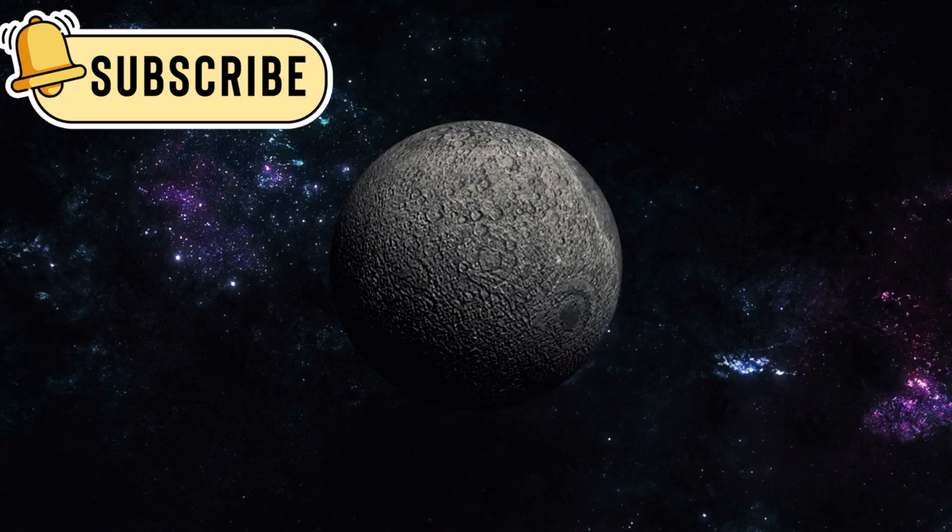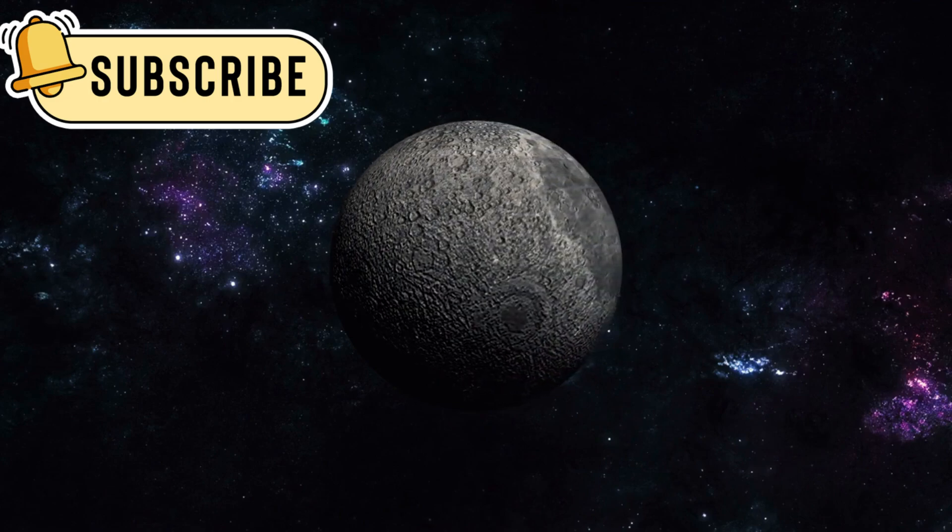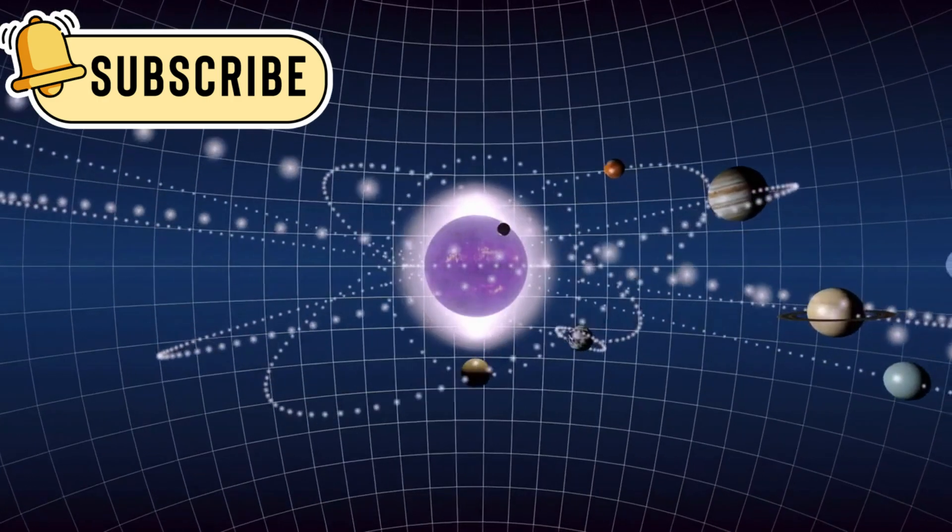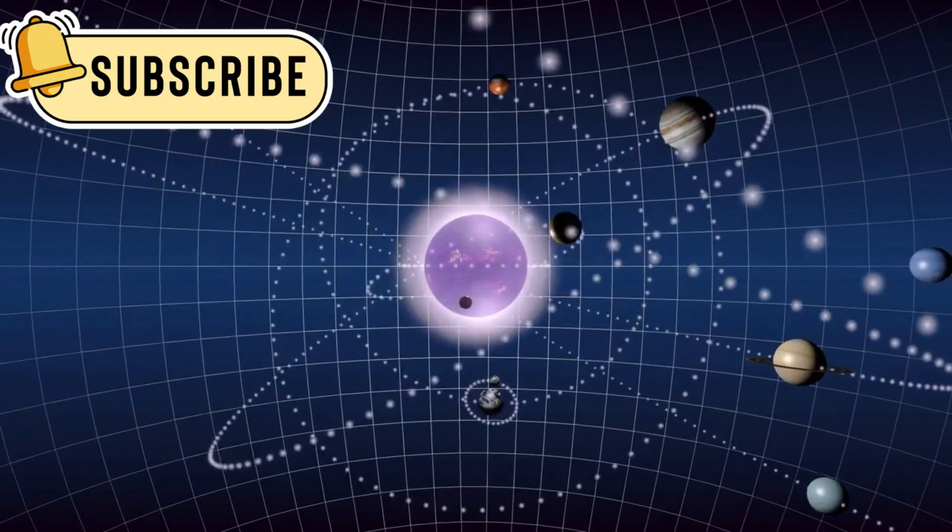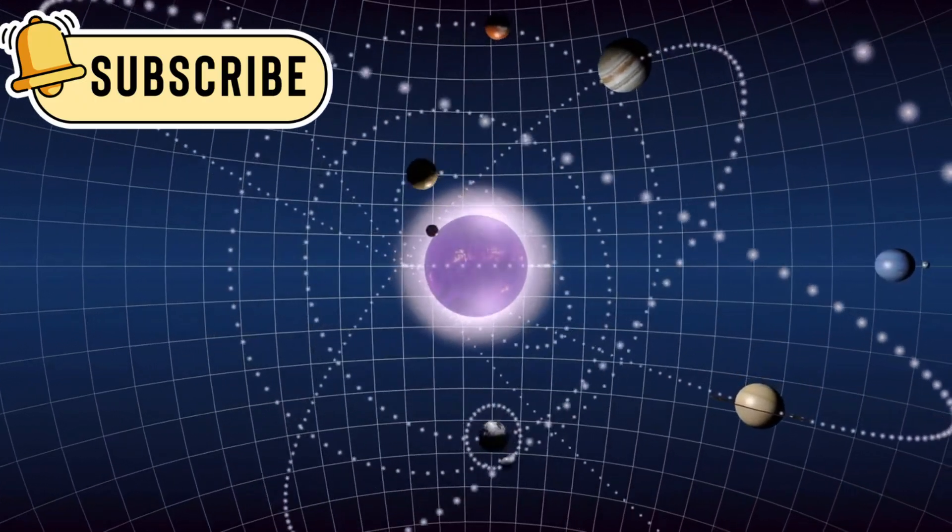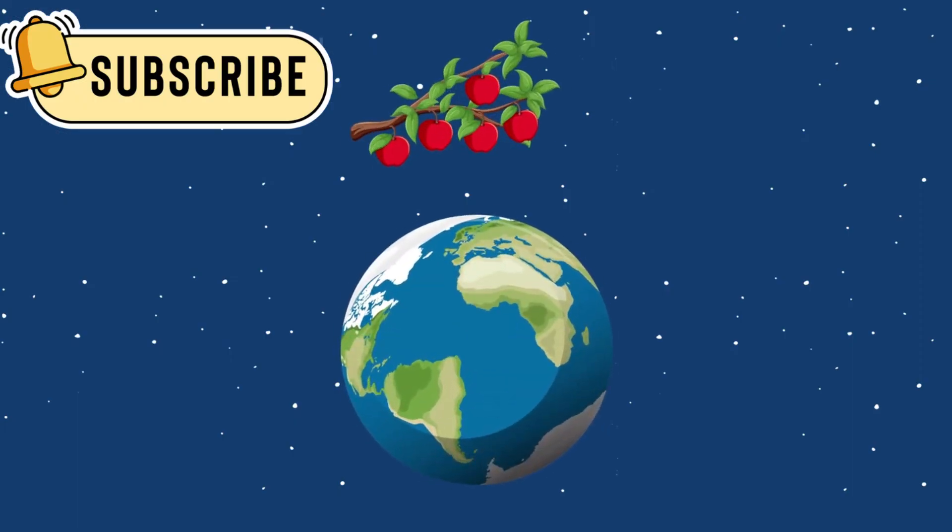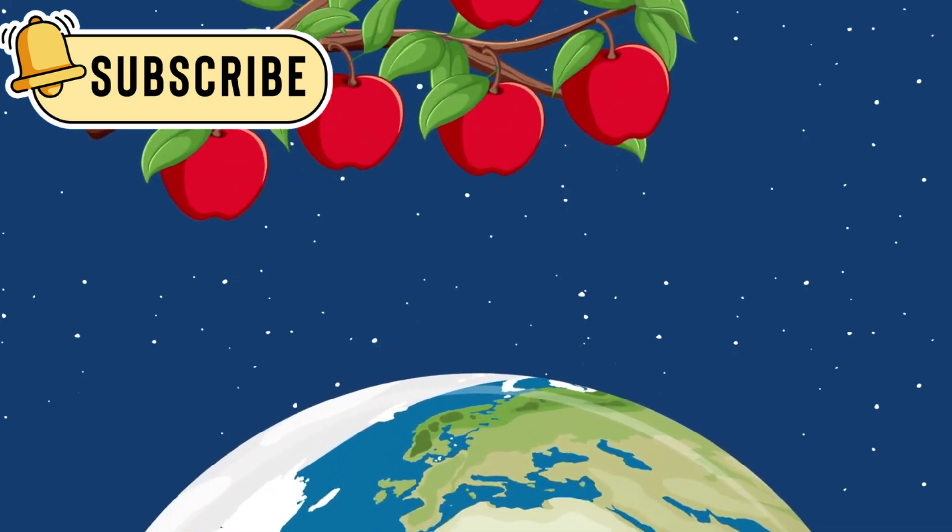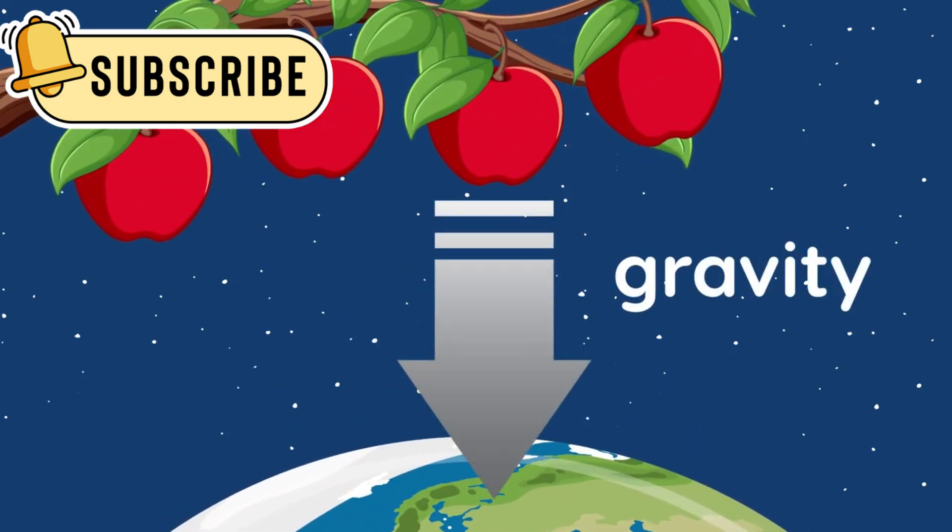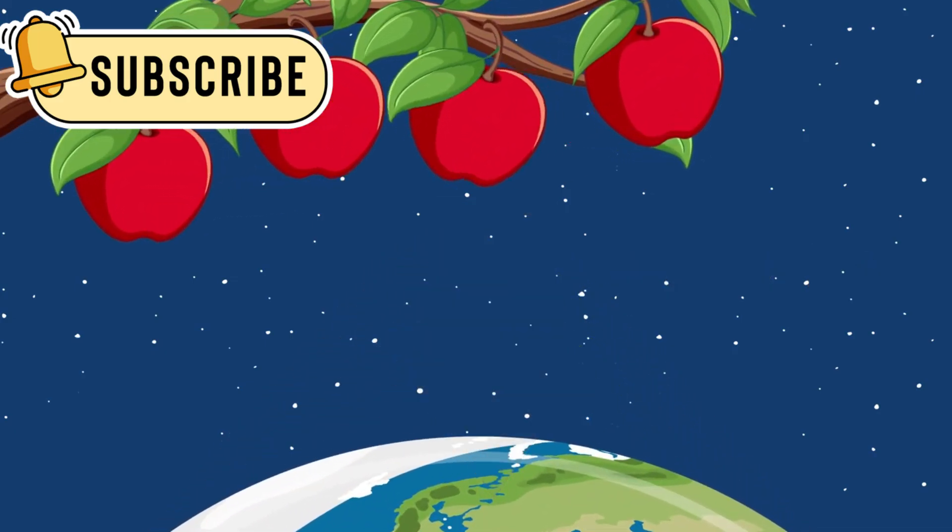Pluto's largest moon, Charon, also plays a special role. It's nearly as big as Pluto itself, creating a unique system where the two bodies orbit each other like a pair. The gravitational forces between Pluto and Charon create internal friction. This friction may help warm the inside of Pluto, keeping its ocean liquid.